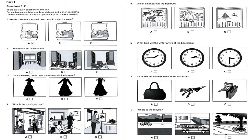This is the Cambridge Preliminary English Test, Test 2. There are four parts to the test. You will hear each part twice. For each part of the test, there will be time for you to look through the questions and time for you to check your answers.